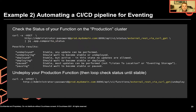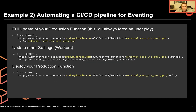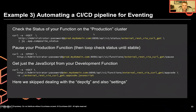Then we check the status on the production cluster to make sure it's undeployed, and if not, we undeploy it. Once fully undeployed, we can do a full update of the function — we don't have to delete it; it will overwrite when undeployed. We can also update the worker count, and then we're ready to deploy the function.